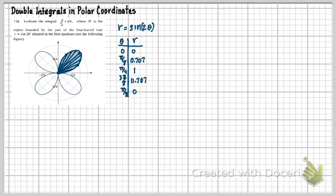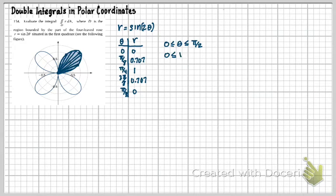So looking at my theta interval, theta goes from zero to pi halves. Now for R: R starts at the origin and goes outward to the boundary, which is sine of two theta. So the bounds for R are zero to sine of two theta.